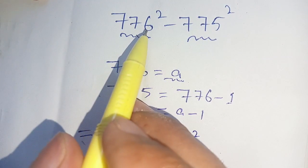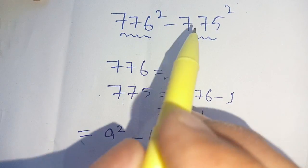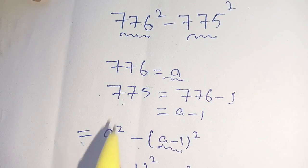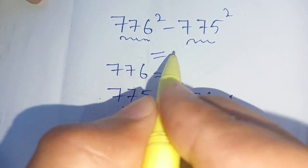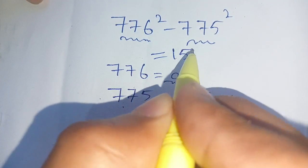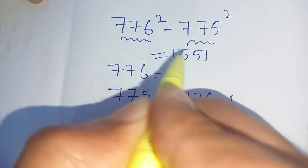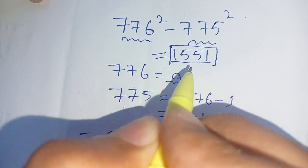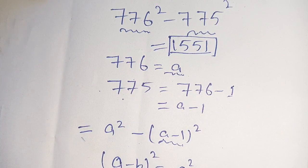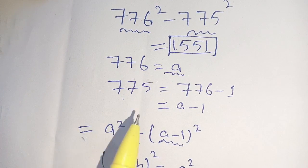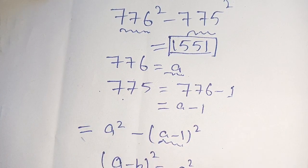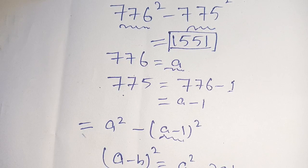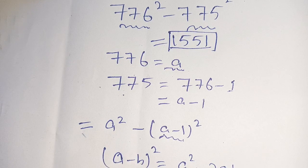Thus 776 square minus 775 square is equal to 1551. If you are new here, make sure to subscribe to our channel for more informative videos. See you in the next video, till then bye.